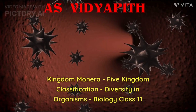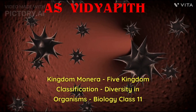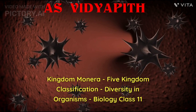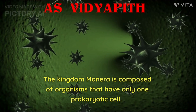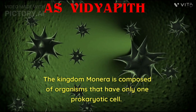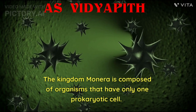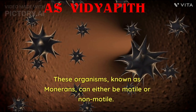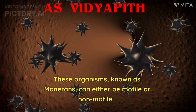Kingdom Monera — Five Kingdom Classification, Diversity in Organisms, Biology Class 11. The Kingdom Monera is composed of organisms that have only one prokaryotic cell. These organisms, known as monorans, can either be motile or non-motile.